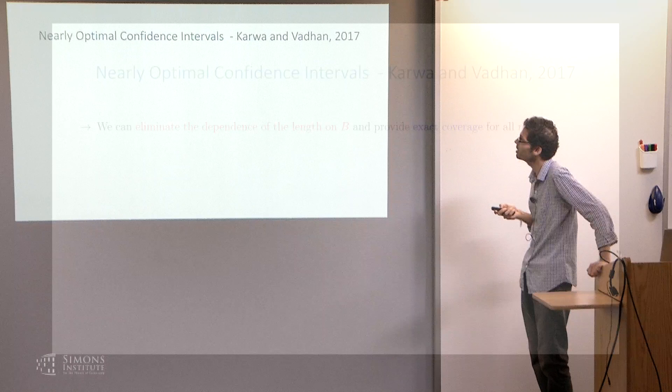Here are our results. We can completely eliminate the dependence of the confidence interval length on B, and we can provide exact coverage for all finite n — not just n equals infinity. The coverage holds for n = 1, 2, 3, 4, 5, all the way up to infinity. For pure differential privacy, we still need to assume the mean parameter lies in [minus R, R], but the dependence on R is only logarithmic — so you can choose R as large as you want without paying much. For approximate differential privacy, you don't even need that assumption, so there's no required input from the user.